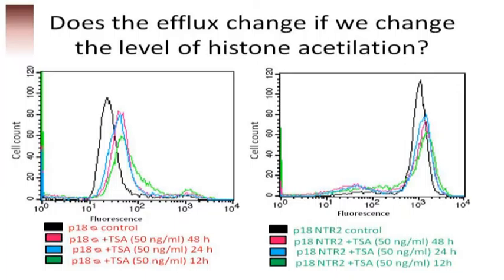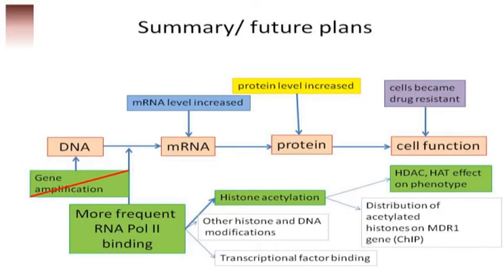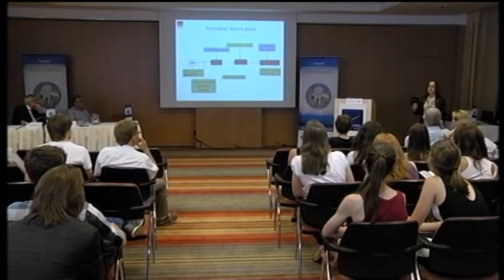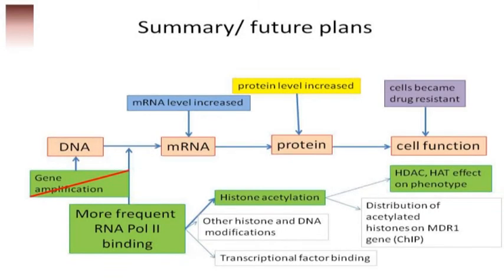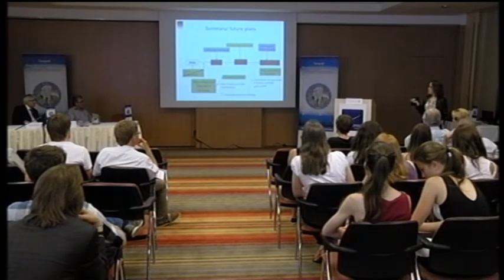In summary, we observed the change in cell function and checked protein and mRNA levels, but found no evidence of gene amplification. We conclude that the main difference lies in transcription regulation, and we observed the role of histone acetylation — demonstrating that changes in histone acetylation can indeed change cell function. In the future, we want to look at other histone and DNA modifications such as DNA methylation, the binding of additional transcription factors, and the distribution of acetylated histones across the gene.